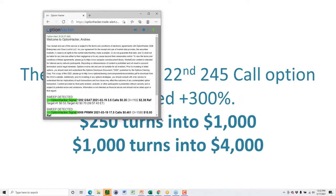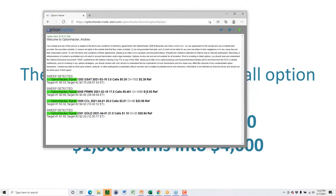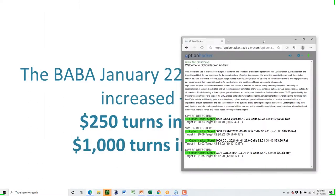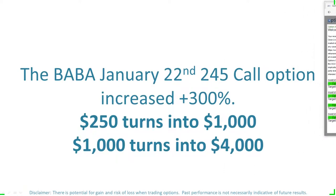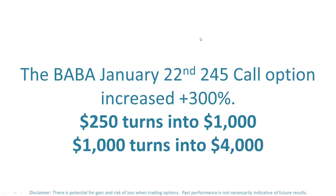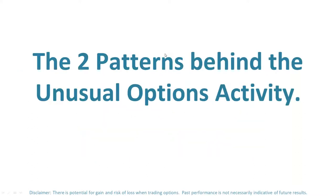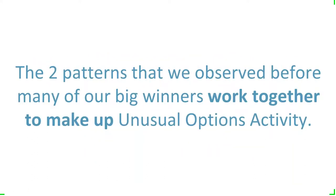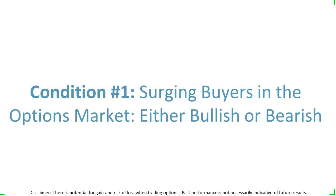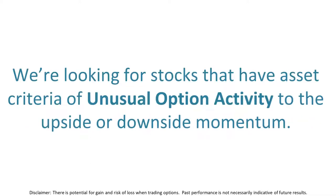We have people who have never traded an option before in their life getting into the scanner and just following the rules. If you want to use the proprietary-based targets, you can — those are just a mathematical equation: one and a half and two times what you pay for the option. You can get the scanner right now; we are 100% sold out online. The two patterns behind unusual option activity that make up our biggest winners — number one, surging buyers in the option market, either bullish or bearish. We're looking for stocks that meet unusual option activity criteria to the upside or the downside.